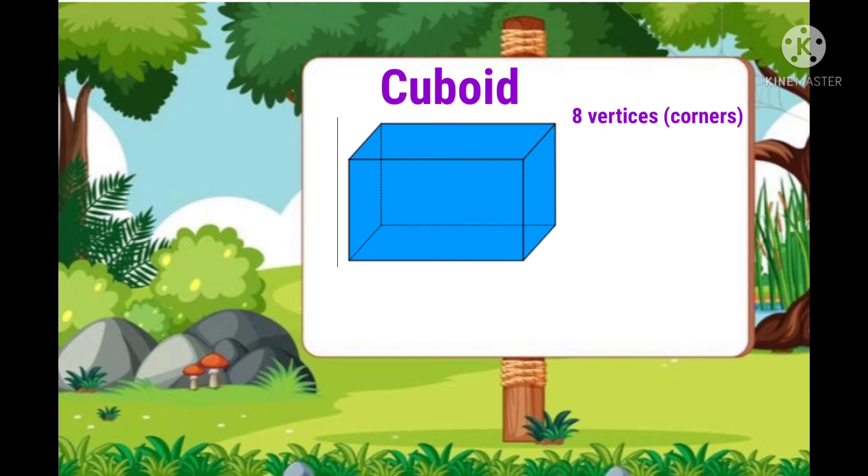A cuboid has 8 vertices or corners. Let us see. 1, 2, 3, 4, 5, 6, 7 and 8.